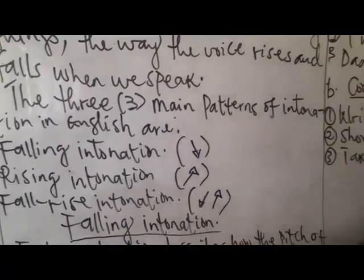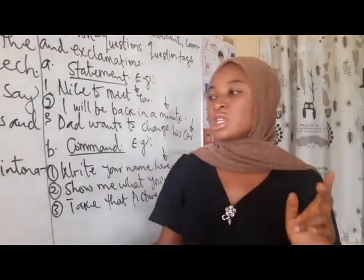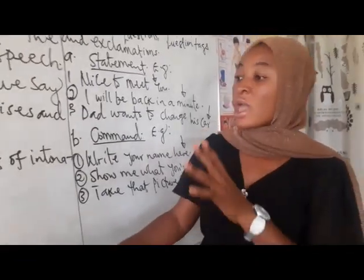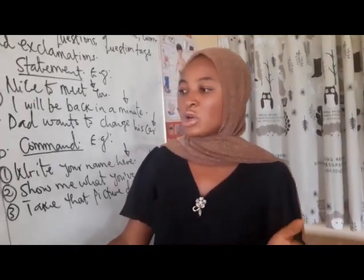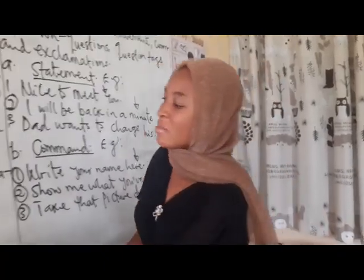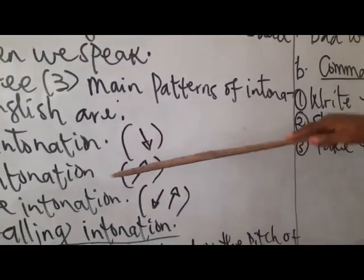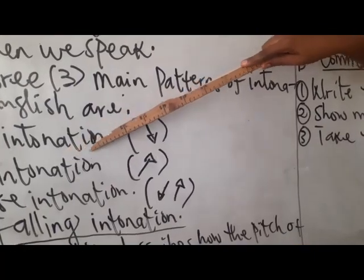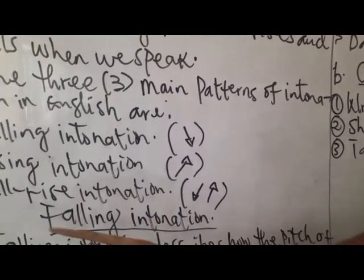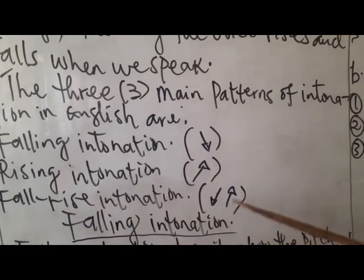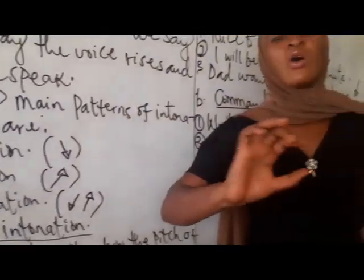I know most of you are more familiar with the two intonations — falling intonation and rising intonation. But there are three basic patterns. Number one: falling intonation. Number two: rising intonation. Number three: rise-fall intonation. This last one is where the voice either goes down or up at the same time in a sentence or given word of speech.